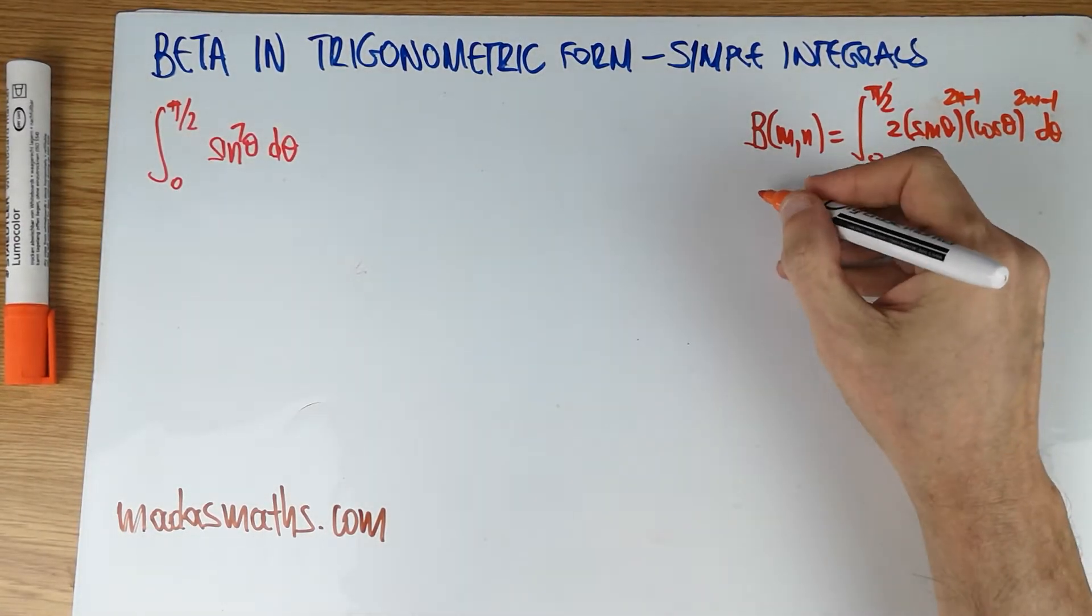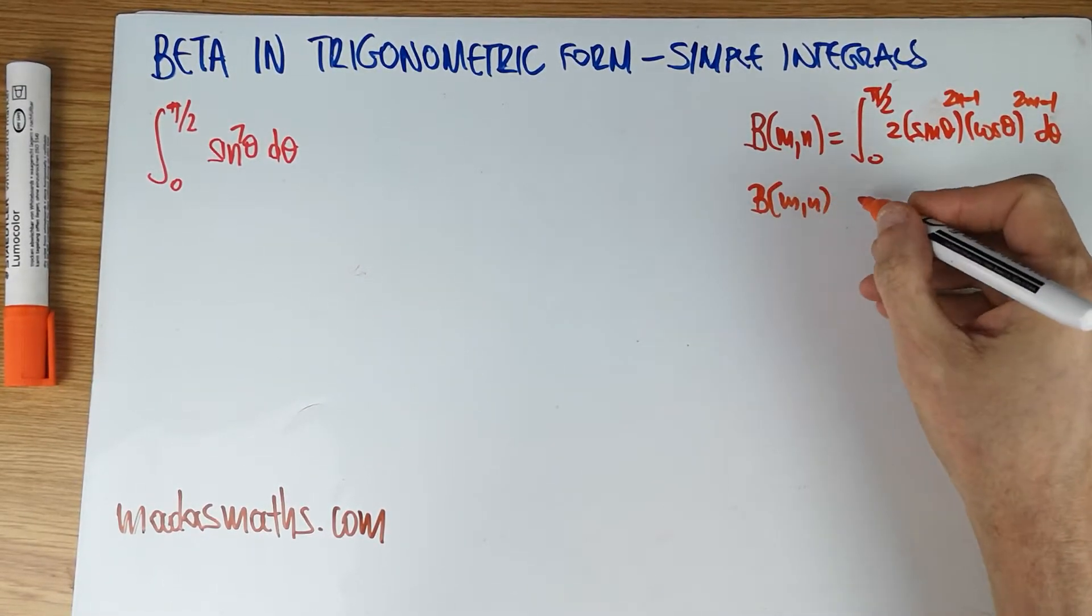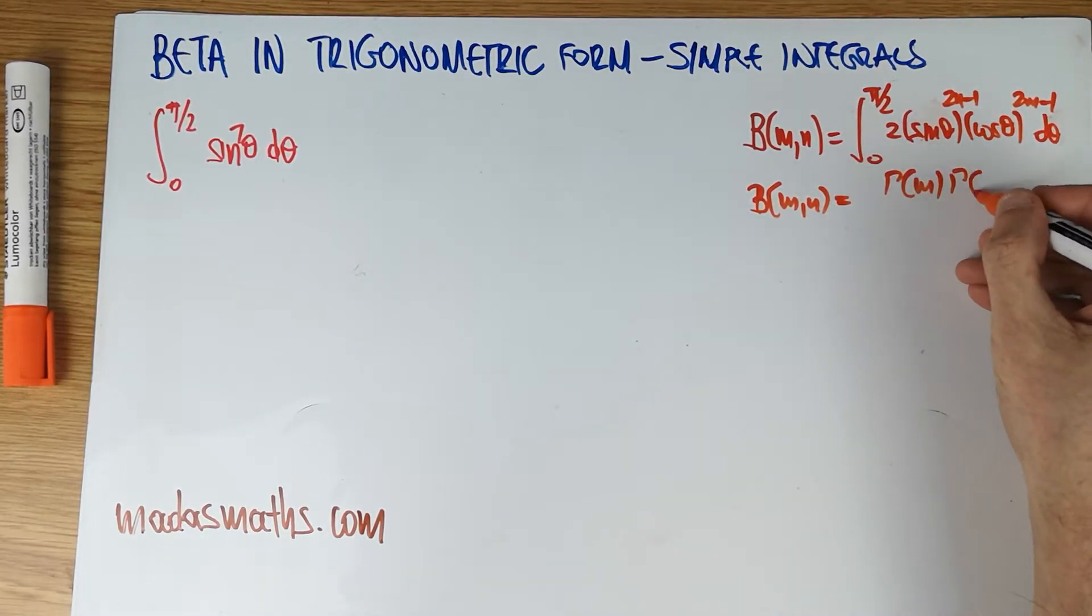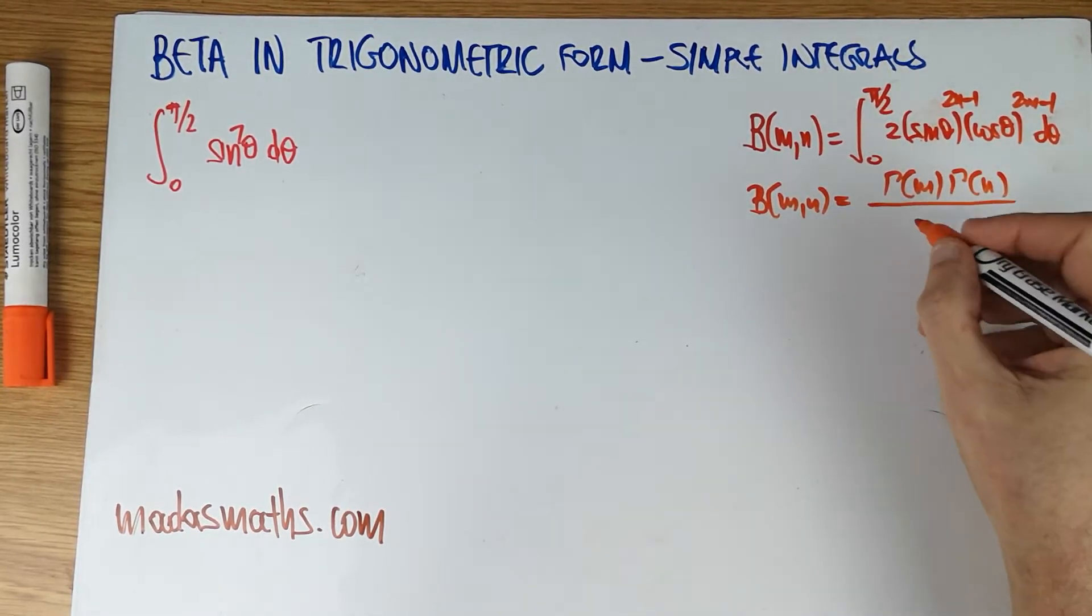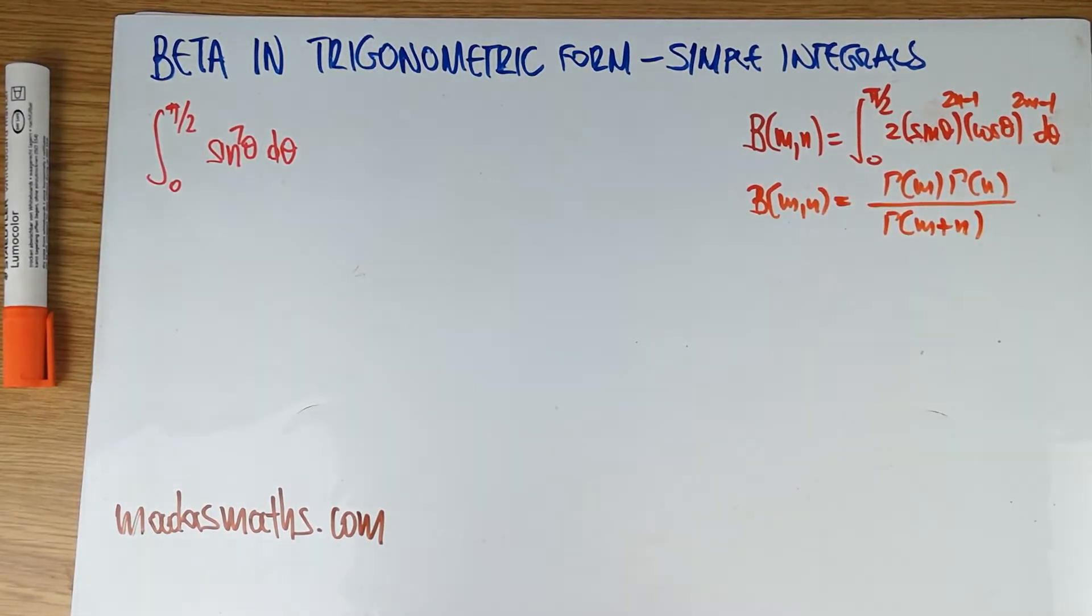And I'm also going to write the standard recurrence relation, which connects beta and gamma. Which of course, that's the gamma of n. Very easy to remember this one. So these are the usual results for the beta function.